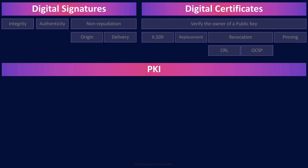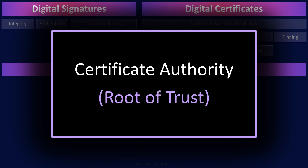Now let's talk about how we create the whole infrastructure that allows us to trust users and systems across an entirely untrusted environment like the internet. Public key infrastructure is the broad set of roles, policies, procedures, hardware, and software that is used to create, distribute, use, store, replace, and revoke digital certificates — so that we can use digital certificates to bind a public key to its owner and trust who we are communicating with. All the trust in a PKI is ultimately rooted in the certificate authority, which is why the CA is often referred to as the root of trust.